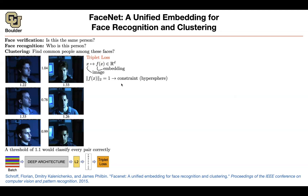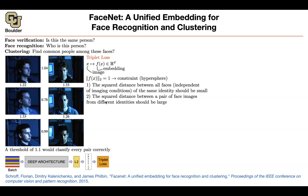You constrain the embedding to have a norm of one, so you end up on a hypersphere. The intuition is: the squared distance between all faces of the same identity should be small regardless of imaging conditions, and images of different people should have representations far away from each other. Otherwise, you'd collapse all features into one single vector.